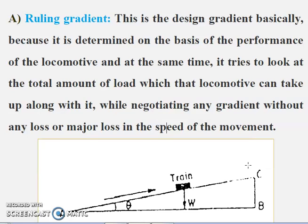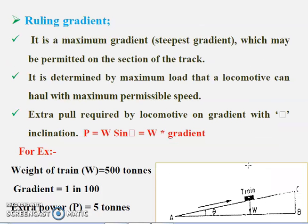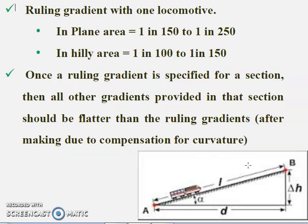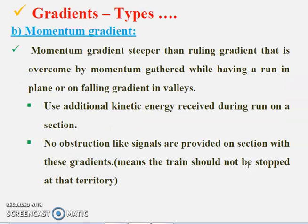In plain terrain, we usually provide the ruling gradient as 1 in 150 or 1 in 250. In hilly terrain, we provide the ruling gradient value as 1 in 10 to 1 in 150. These values are shown in the figure provided.